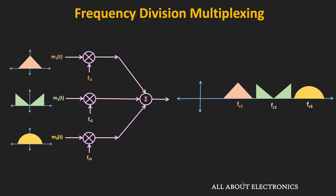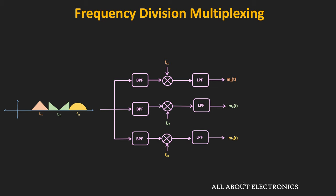At the receiver, with the help of bandpass filters, the individual message signals can be separated. The output of each bandpass filter is demodulated, and this demodulated signal is then passed through a lowpass filter. After demodulation, we get two spectrums: one is the baseband signal, and the other is the same copy of the message signal at the 2FC frequency. The lowpass filter only passes the baseband signal and eliminates the frequency component at 2FC. In this way, the frequency division multiplex signal can be demultiplexed.